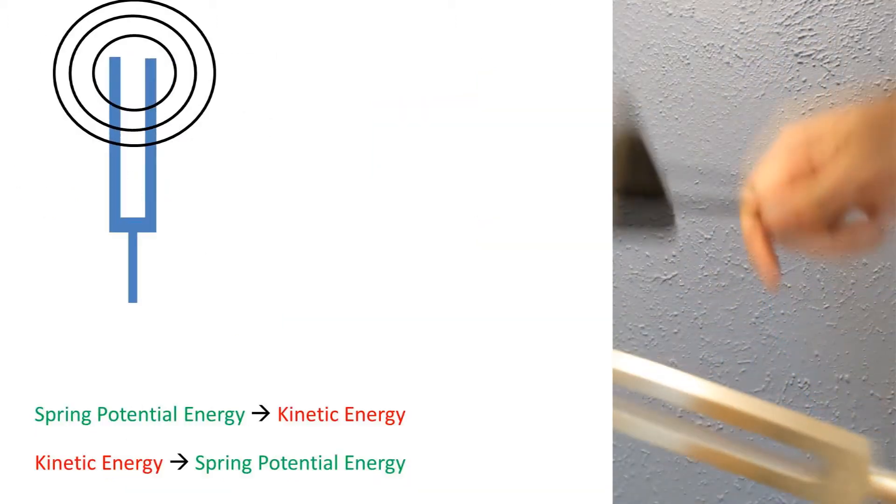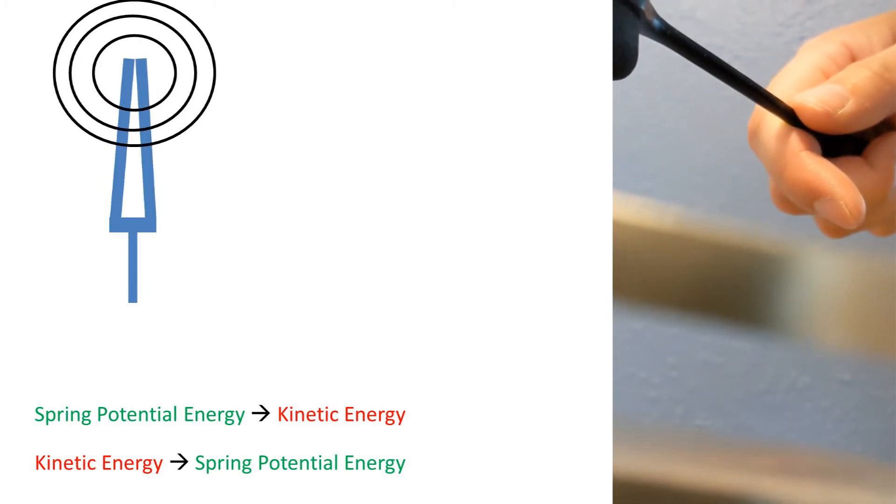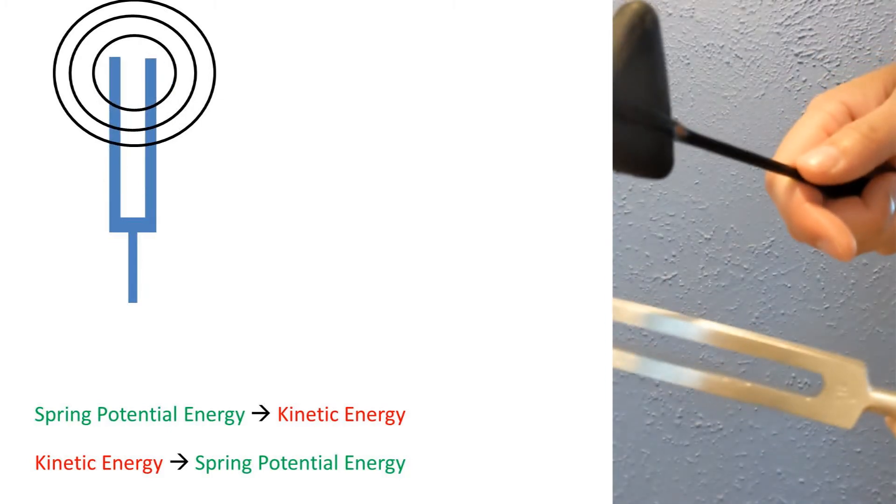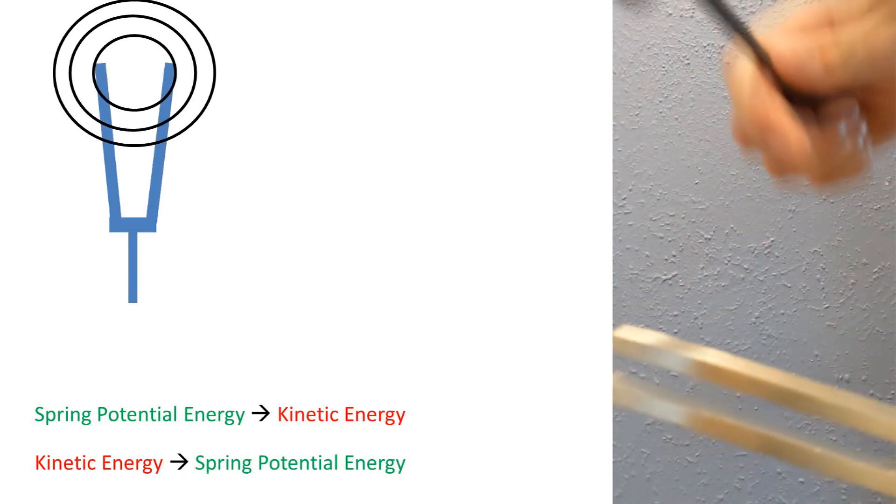Going back to the tuning fork, the prongs of the fork are transferring kinetic energy to spring potential energy and spring potential energy to kinetic energy, which causes the air to vibrate in a rhythmic pattern, which causes a musical note.